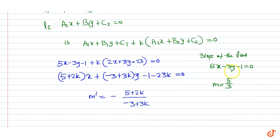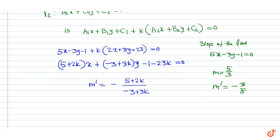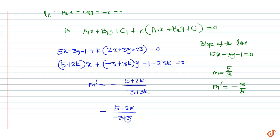The slope of the line perpendicular to this line is m dash equal to minus 3 by 5. Therefore, this slope is equal to minus (5 plus 2k) divided by (minus 3 plus 3k) equal to minus 3 divided by 5.